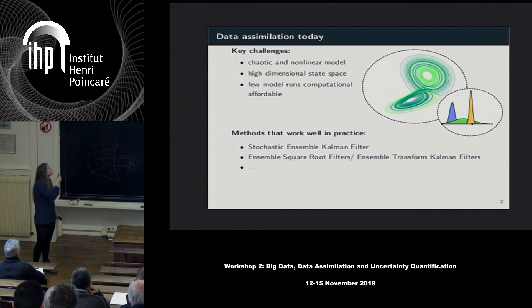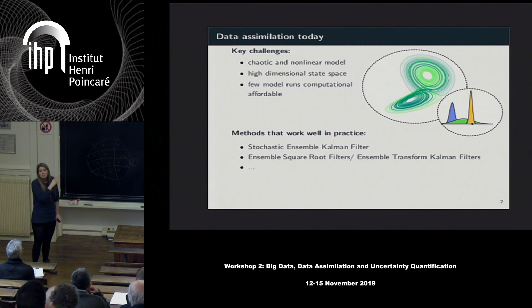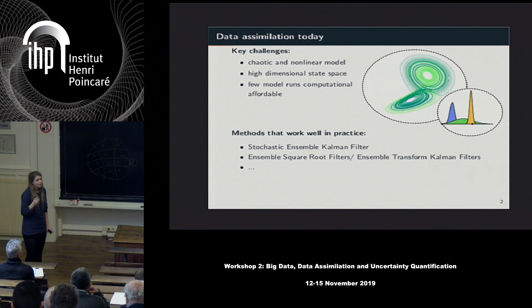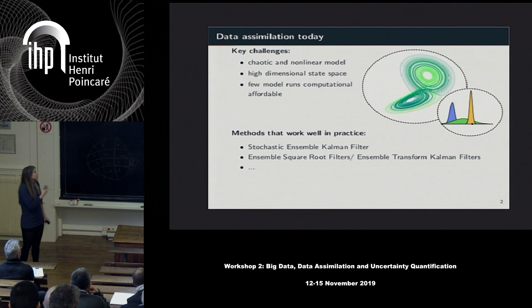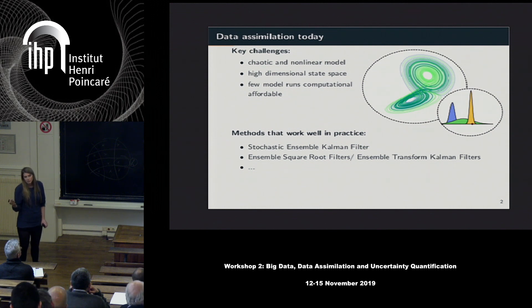Those approaches may be applicable in the future for these kinds of problems, but currently at all the weather centers for numerical weather prediction, there is mostly still some form of Gaussian assumption, and they are using either variational methods or sequential methods that incorporate this Gaussian assumption.